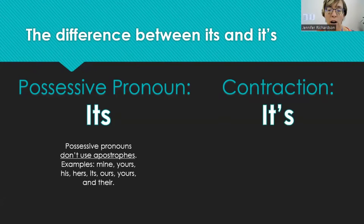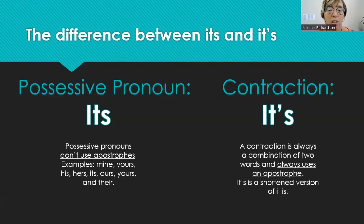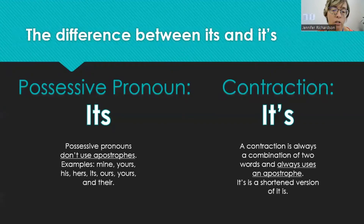It's with an apostrophe is a contraction. Remember, that apostrophe holds the place of the missing I. All contractions have apostrophes — they can't exist without the apostrophe. The apostrophe holds the place of the missing letters. A contraction is always a combination of two words and always uses apostrophes. It's is a shortened version of it is.